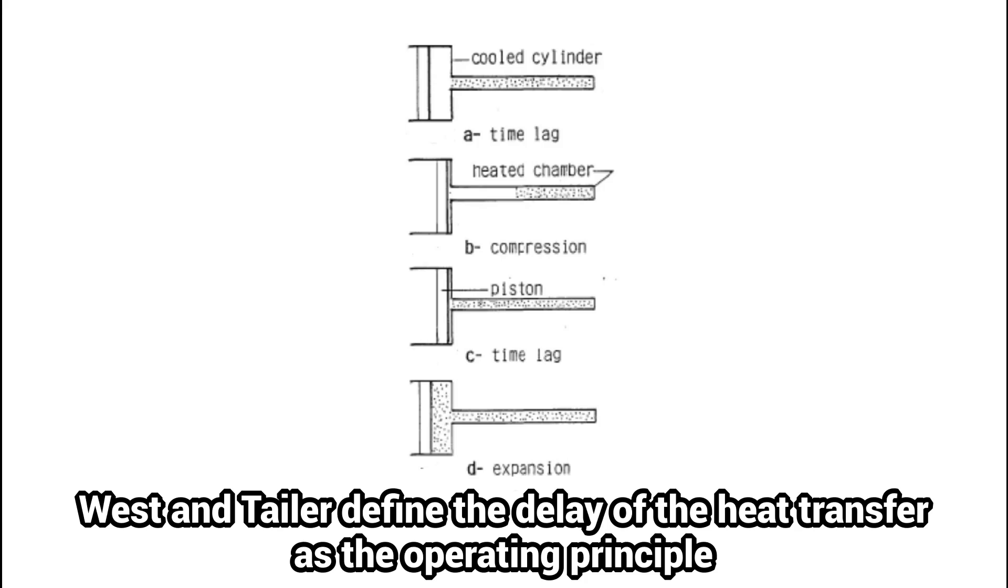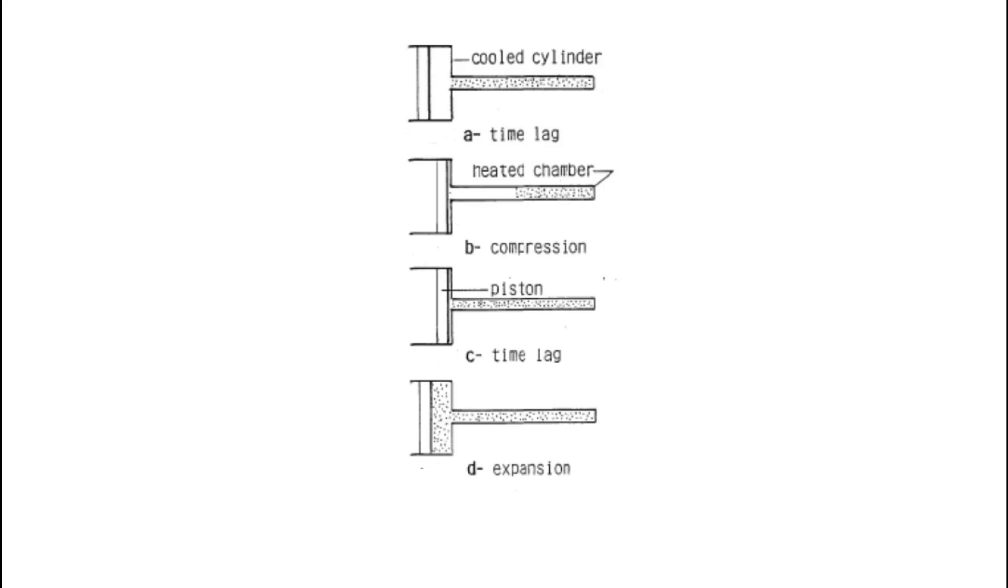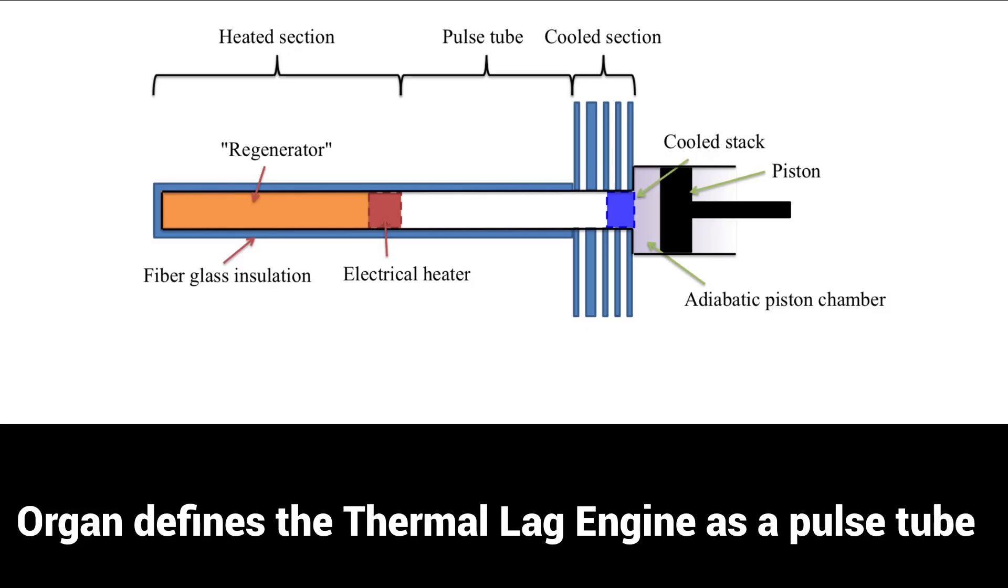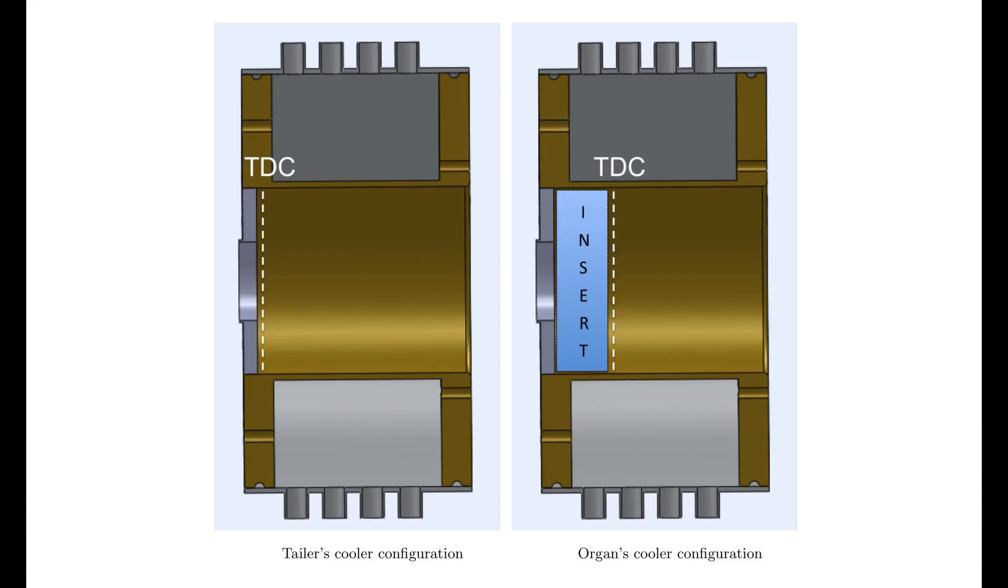Colin D. West and Peter Taylor claim that the main effect of the TLE is the bulk motion of the fluid from the hot to the cold space and back, which leads to the heat transfer that drives the engine. Alan Organ explains the engine from a completely different perspective. He identified the connecting space between the hot and cold spaces of the TLE as a pulse tube. Further analysis revealed that both theories are not explicitly contradictory but represent different implementations of the same effect.